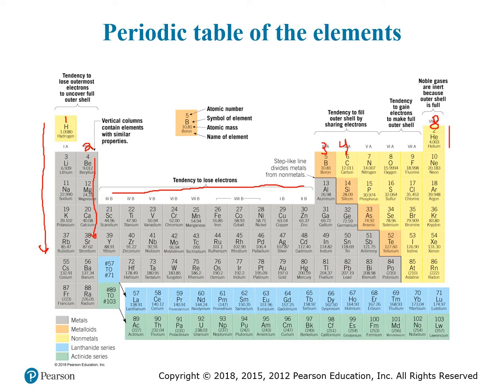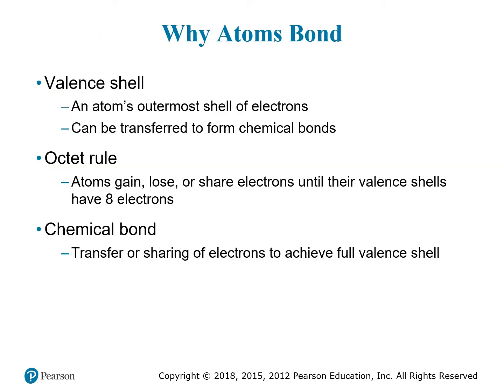The noble gases in group eight don't bond with anything because they already have eight electrons in their outer shell, fulfilling the octet rule. Atoms tend to gain, lose, or share electrons until they fill their outermost valence shell. Chemical bonds are essentially the transfer or sharing of electrons to achieve eight electrons in that outer shell — the lowest energy state — and that's what drives chemical reactions in nature, including the formation of minerals.